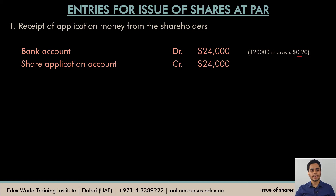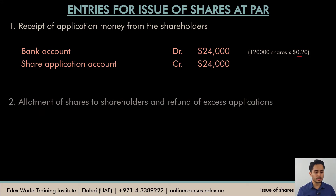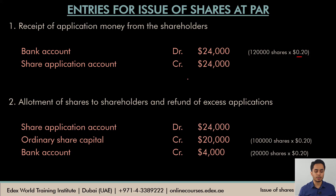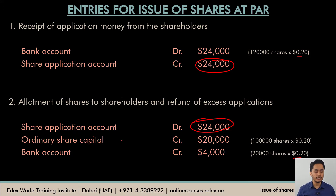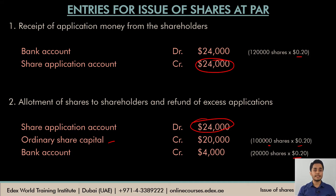Once the company receives applications, the next step is to allot the shares. Allotment will not be for more than 100,000 shares, so whatever is not allotted must be refunded. The share application account, which was credited $24,000, is now debited to close it. Bank is credited to refund the 20,000 excess applications: 20,000 × 0.2 = $4,000. The amount for the 100,000 shares allotted is transferred to the ordinary share capital account: 100,000 × 0.2 = $20,000.